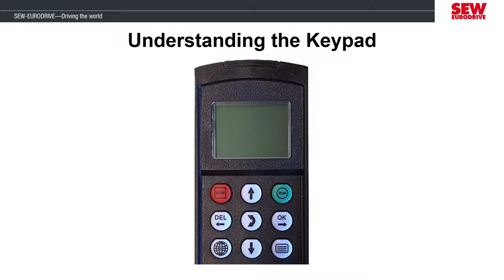Here's what the top half of the keypad looks like. Before we go to the demonstration portion, I want to explain the purpose of each control button. The button with the globe icon allows you to toggle between the pre-programmed languages. If you accidentally change the language while using the keypad, you can keep toggling this button until it returns to the language you prefer. There are only a handful of languages to toggle through until you get back to the preferred one.